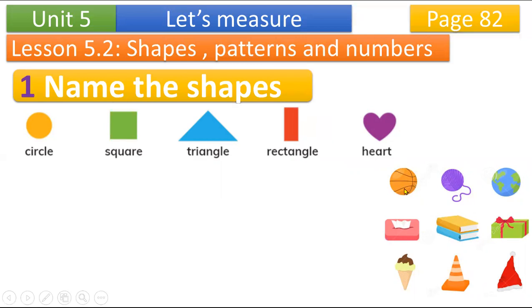For example, the ball is a circle. Look at this ball — the ball is a circle. The globe is a circle. The tissue box is like a rectangle. The book is a rectangle. The gift box is a rectangle. The ice cream scone is like a circle. This is a triangle shape — the stopper, and this wool hat is like a triangle. So here are the shapes — you need to memorize the names.